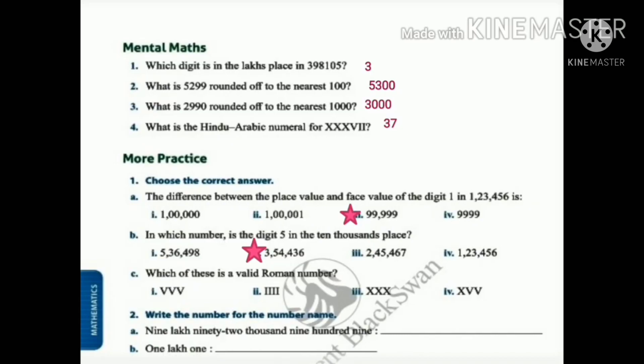Now which of this is a valid Roman number? VVV - we know that the numeral V cannot be repeated. Also in the second option we have 4 I's. We know that the number I cannot be repeated more than 3 times. But the number XXX is repeated 3 times and so the answer is correct, that is XXX is correct, so the third option is correct.